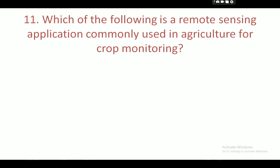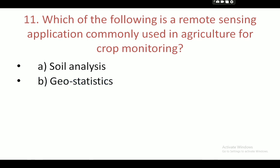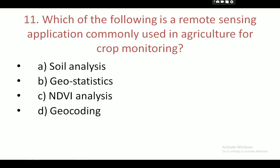Next question: which of the following is a remote sensing application commonly used in agriculture for crop monitoring? Your options are: soil analysis, geostatistics, NDVI analysis, and geocoding. Your correct answer is C — NDVI analysis.